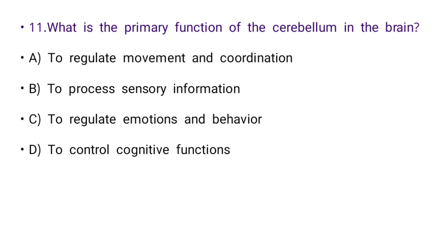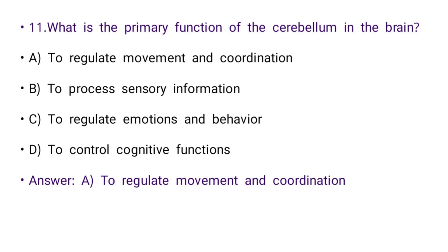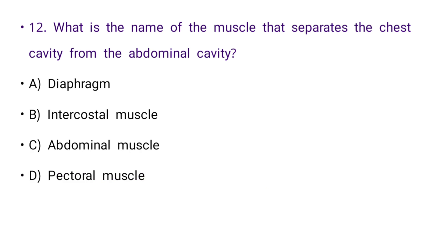Next: What is the primary function of the cerebellum in the brain? Options: to regulate movement and coordination, to process sensory information, to regulate emotion and behavior, or to control cognitive function. The right answer is A: to regulate movement and coordination.